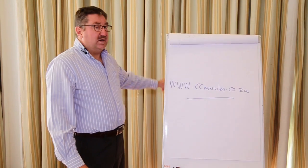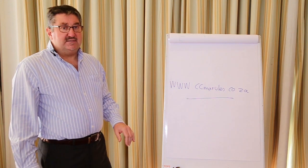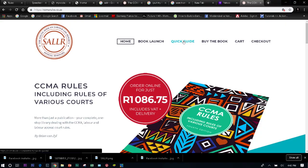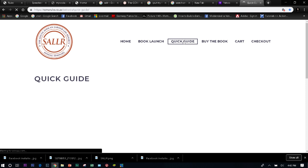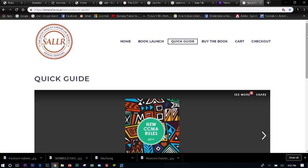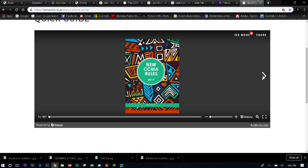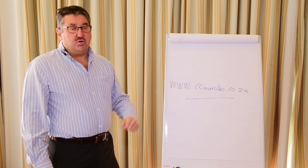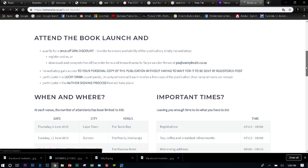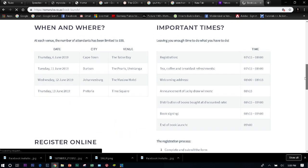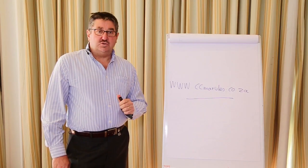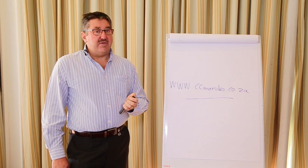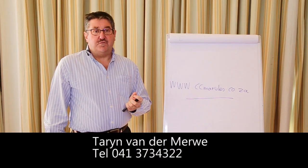If you want to have a preview of what the book looks like, please go to our specially designed website www.ccmarules.co.za, click on the quick guide, and you have access to around about 150 pages of the publication. The book launch is countrywide from the 6th of June until the 13th of June, and the details of the book launch you can get on that website. Thank you very much for embarking on this journey with us. We look forward to seeing you at any of the book launches countrywide, and if you have any queries please dial Taryn van der Merwe directly on 041-373-4322.